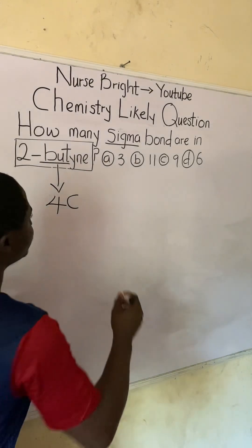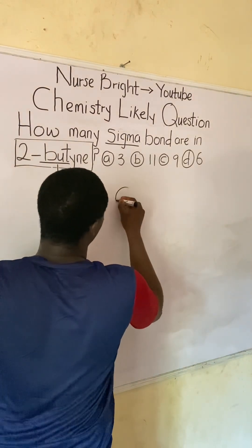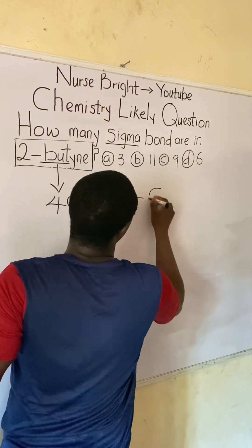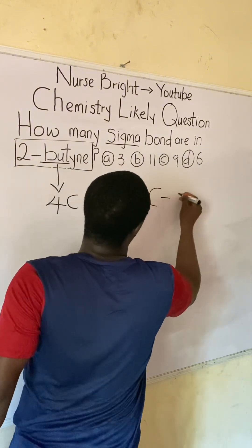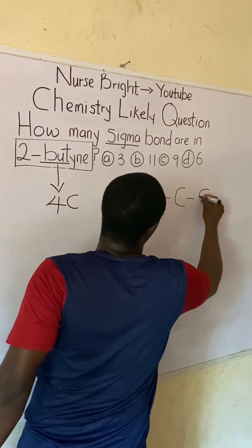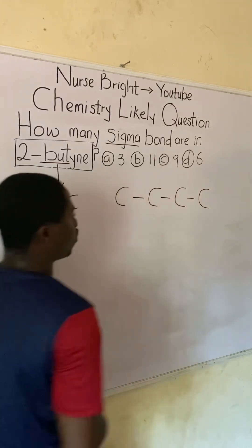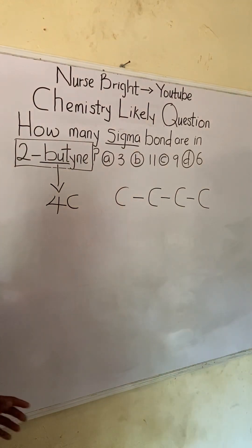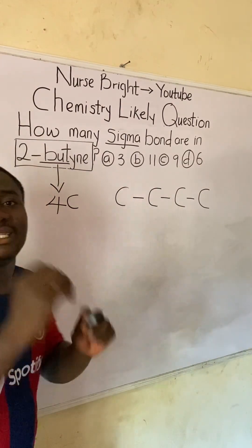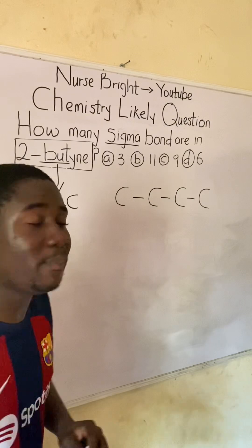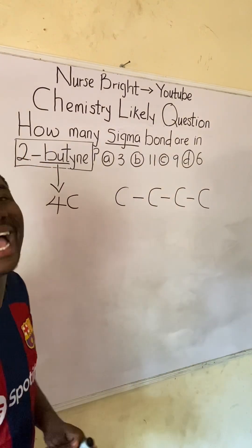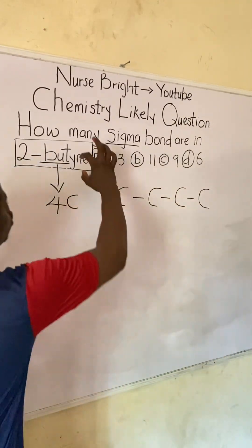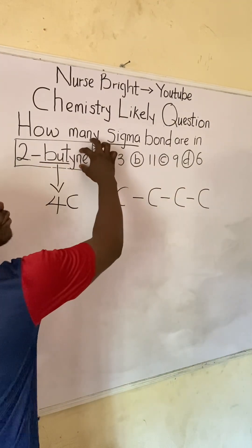First of all, let's draw out our four carbons. These carbons are bonded together, as you can see how we've done it already. Moving further, they said the name of the compound is 2-butyne. Now let's get back to the other part of the name.